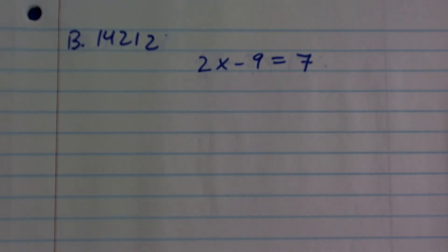Okay, let's get at this one really quickly. So here I have 2x minus 9 equals 7.